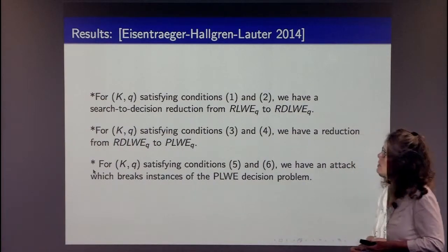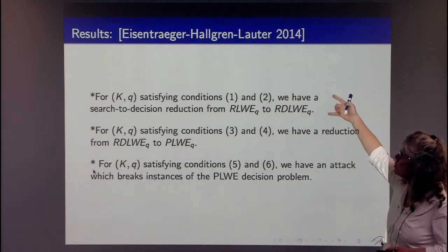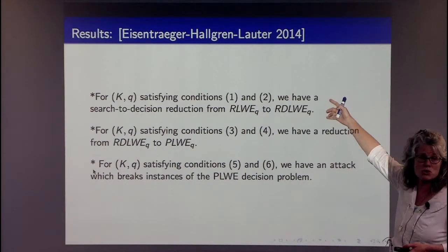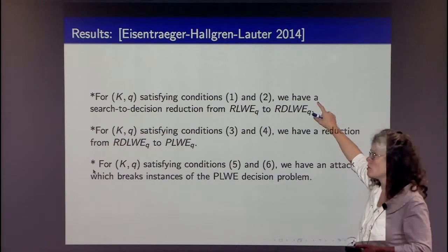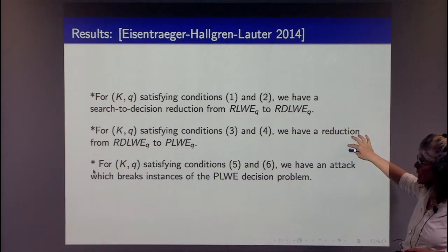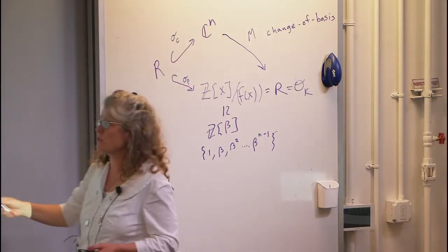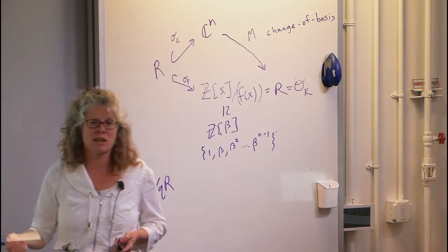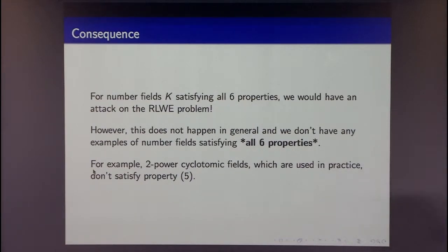Conditions one and two are needed for the known search-to-decision reductions — though those reductions could potentially be extended. Conditions three and four allow a reduction between PLWE and the actual RLWE instances. Conditions five and six are what we need for a meaningful attack at practical crypto sizes. Unfortunately, we could not find number fields satisfying all six properties at once. The two-power cyclotomic fields satisfy all five properties except the one you need to attack them — which is very convenient for us.